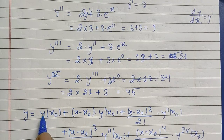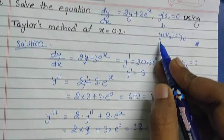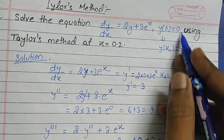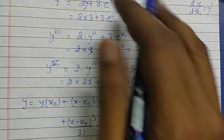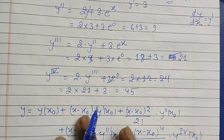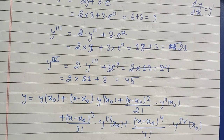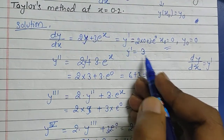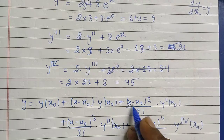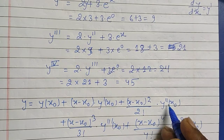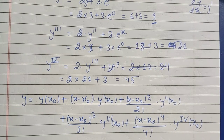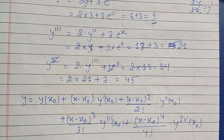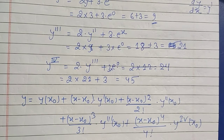Now put in all values. y(x₀) = y₀ = 0. x₀ = 0 in every term. So we have: 0 + x·3 + x²/2·9 + x³/6·21 + x⁴/24·45. That is: y = 3x + 9x²/2 + 21x³/6 + 45x⁴/24.